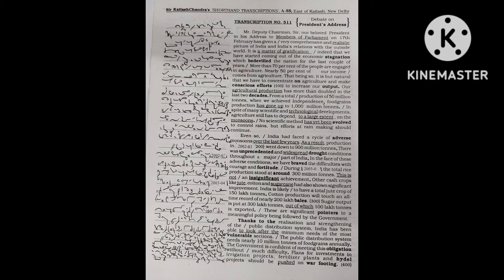India is likely to have a total jute crop of 150 lakh tons. Cotton production will touch an all-time record of nearly 200 lakh bales. Sugar output is put at 300 lakh tons, out of which 100 lakh tons is exported.